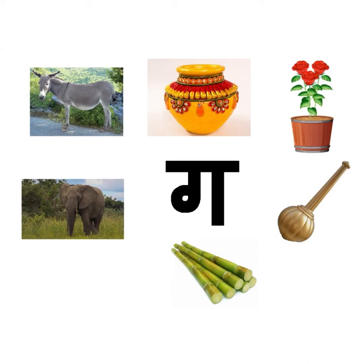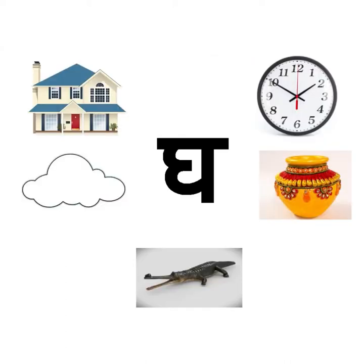Vyanjan Ga: Ga se Gadha, Ga se Gagari, Ga se Gamla, Ga se Gaj, Ga se Gada, Ga se Ganna. Gha se Ghar, Gha se Gadi, Gha se Gana, Gha se Gadiyaal.